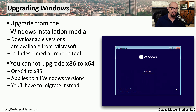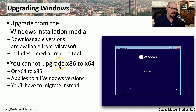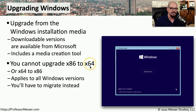It's also important to know which version of Windows you're upgrading from and which version you're upgrading to. There are some limitations that you need to be aware of. For example, you can't upgrade from a 32-bit version of Windows to a 64-bit version of Windows, and conversely, you also can't upgrade from 64-bit back to a 32-bit version.